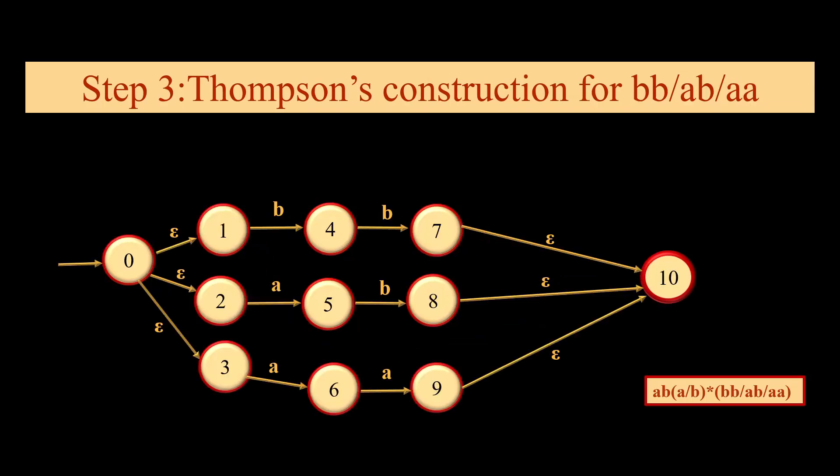Now we come to the third point, that is bb or ab or aa. If we talk about Thompson's, the first thing which comes to mind is that we should take three epsilon out moves, and corresponding to every epsilon out move, we will have one state and we will combine all these three epsilon outputs on final state. But this is wrong.